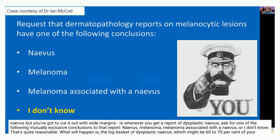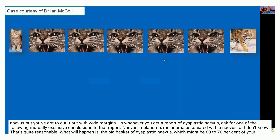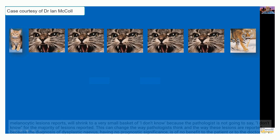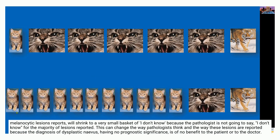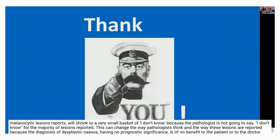What will happen is the large basket of dysplastic nevus diagnoses — which currently might be 60 or 70 percent of your melanocytic lesion reports — will shrink to a very small basket of 'I don't know,' because pathologists are not going to say 'I don't know' for the majority of lesions. This can change how pathologists think and how lesions are reported, because the diagnosis of dysplastic nevus has no prognostic significance and is of no benefit to the patient or to the doctor.